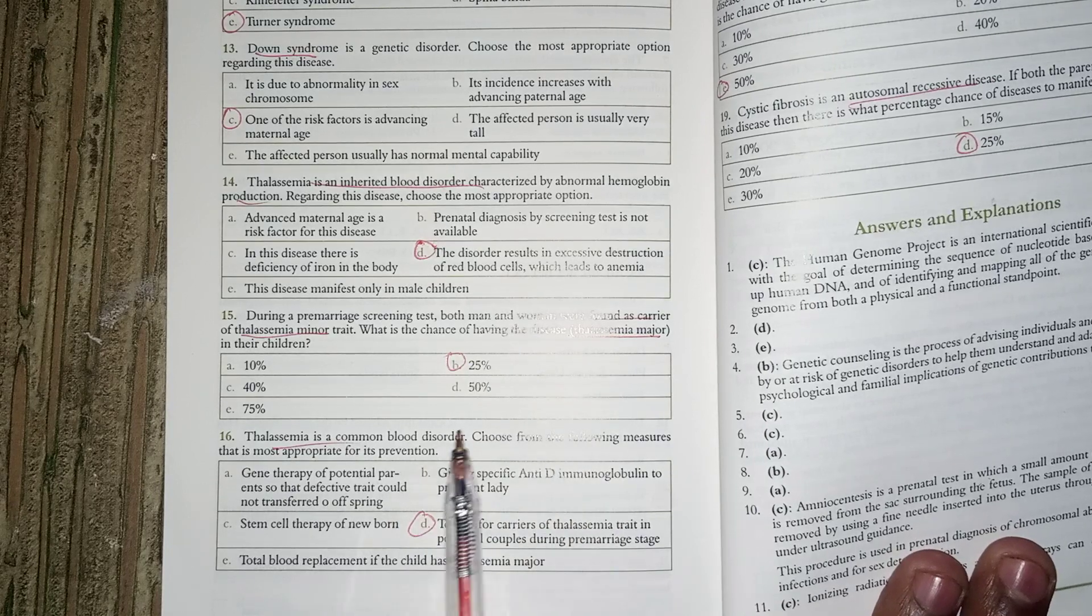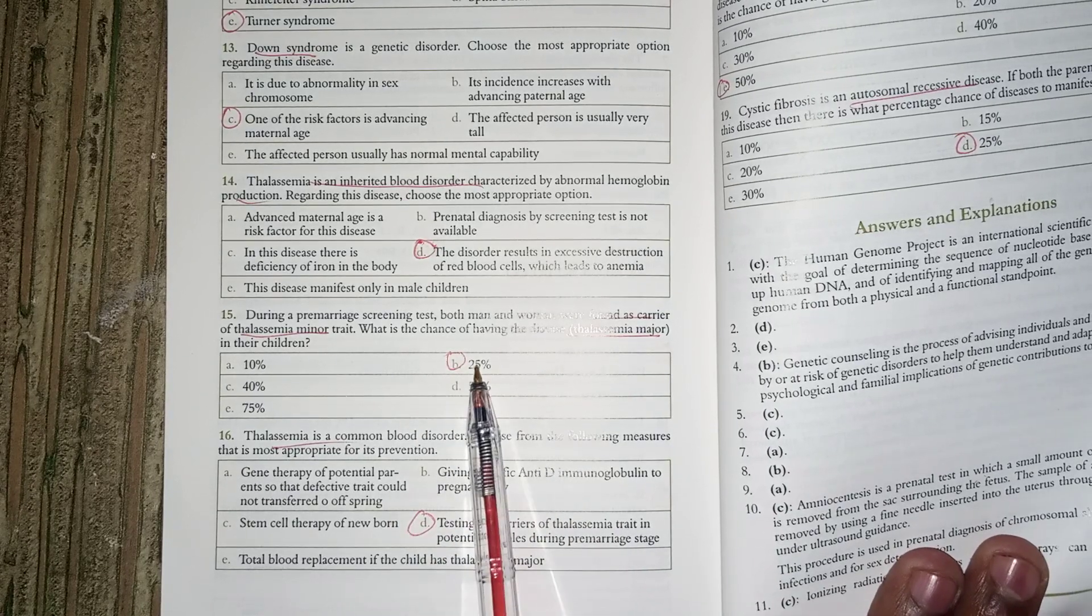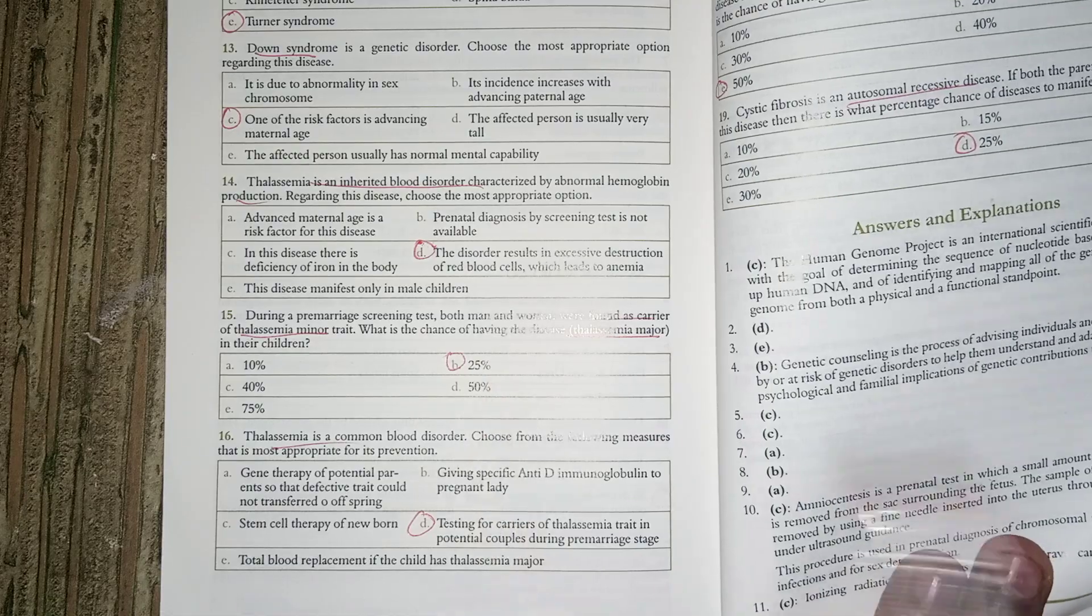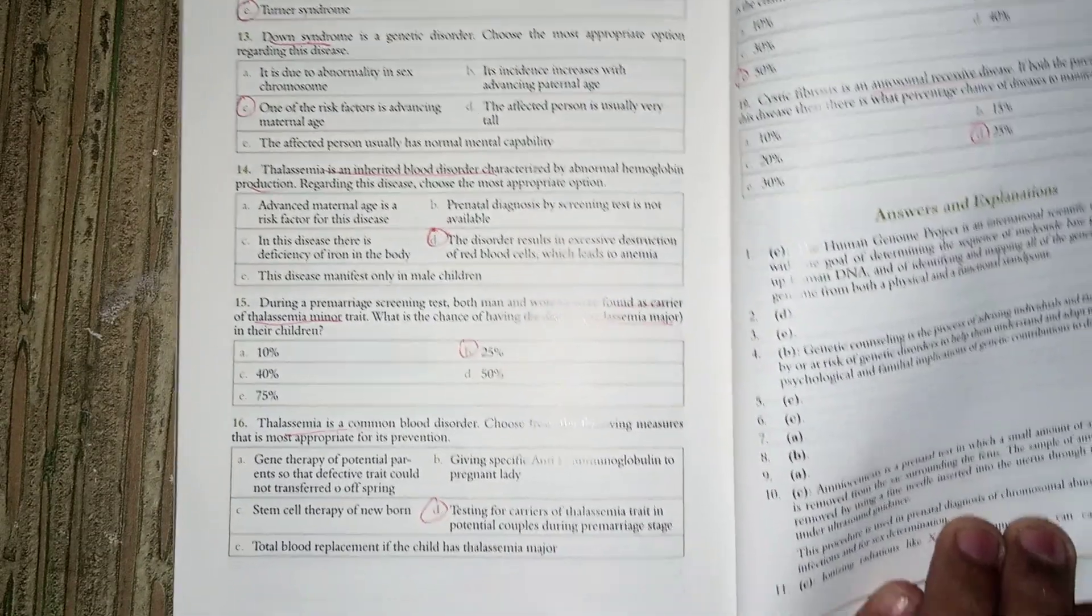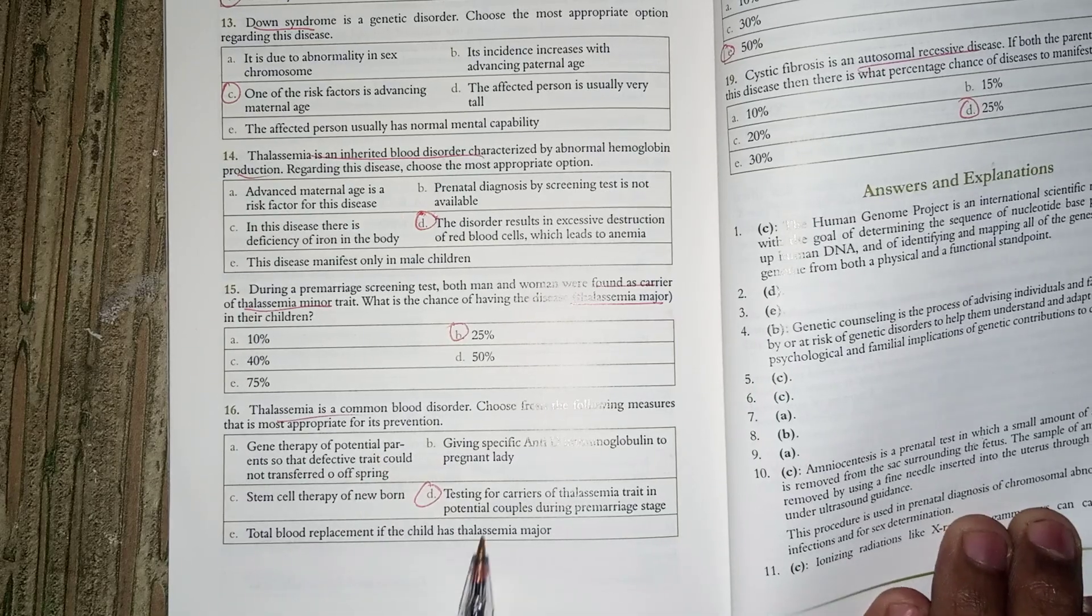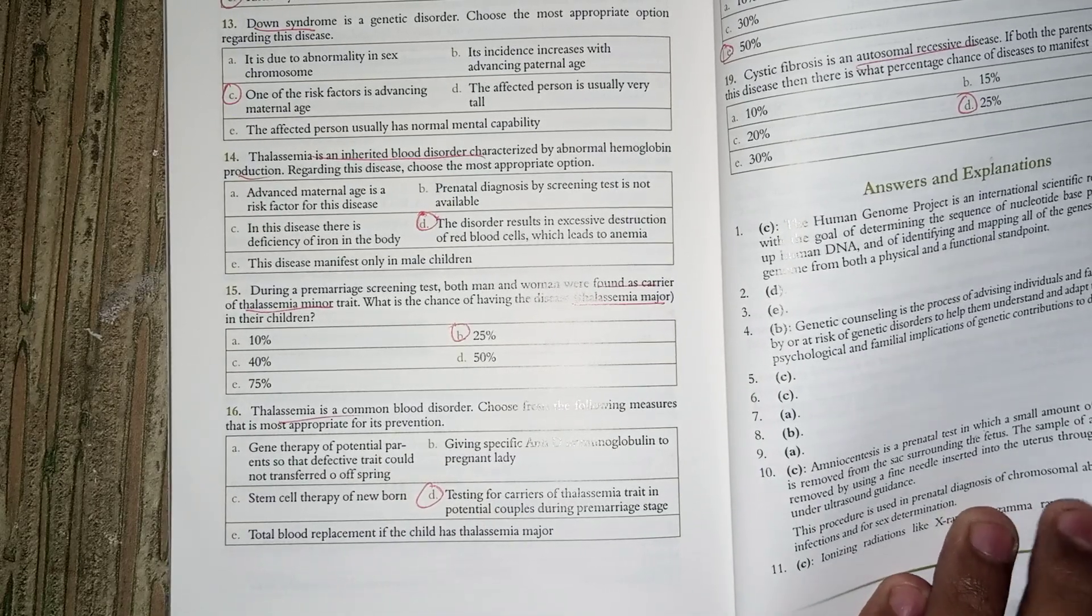If both parents are autosomal recessive carriers, there is 25% probability of affected offspring. If autosomal dominant, 50% will be affected. Thalassemia is a common disorder. Testing for thalassemia carriers is recommended during the pre-marriage period.